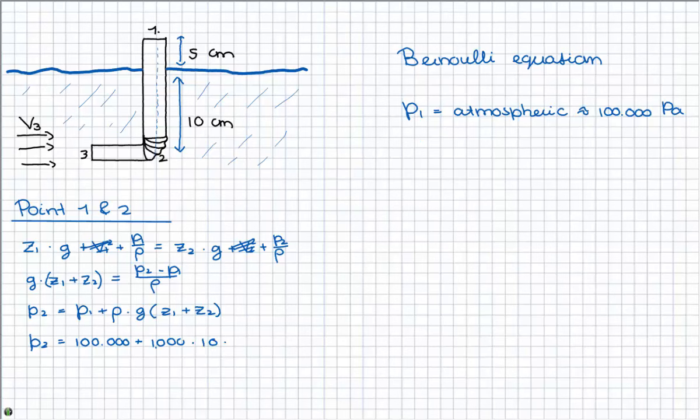So this is 100,000 pascals times the density times g times the difference in height, which is 0.15 meters. You have to get the units right, of course. This is 101,500 pascals.